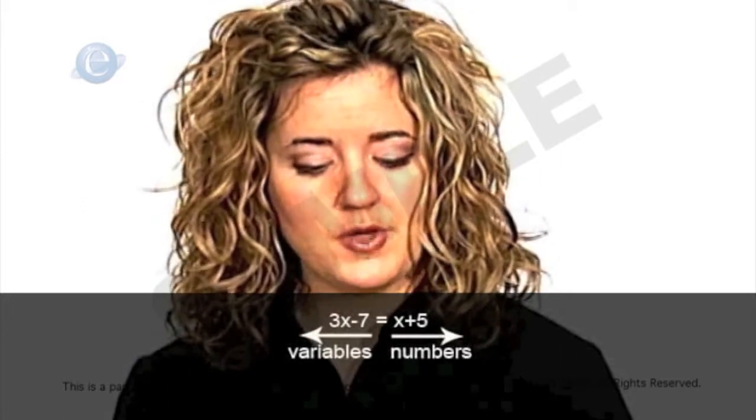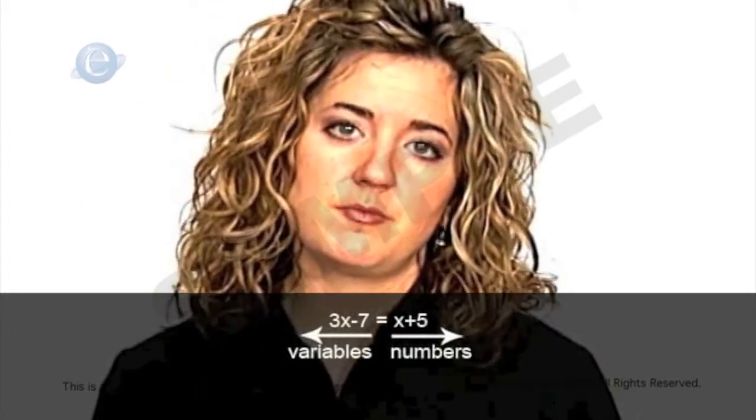Solving the equation means simply figuring out what value the variable or variables have. To do this, you combine all the like terms on one side of the equation and all the constants or numbers on the other side.